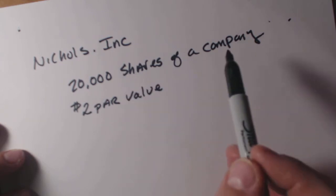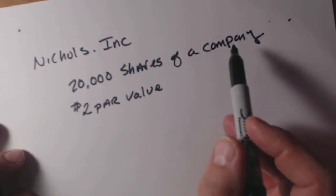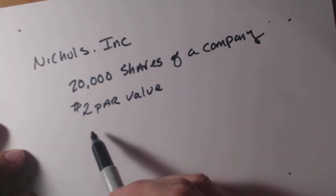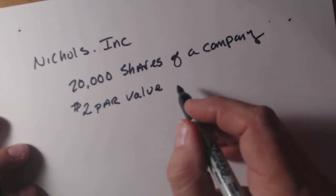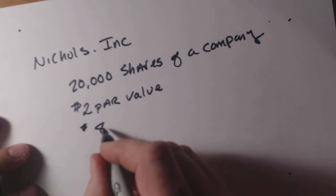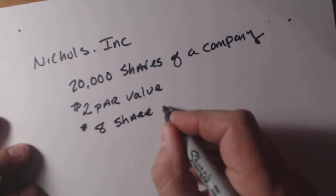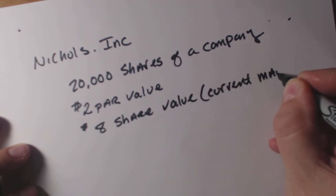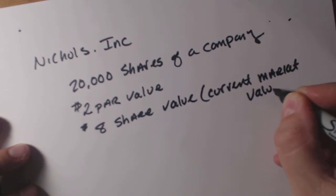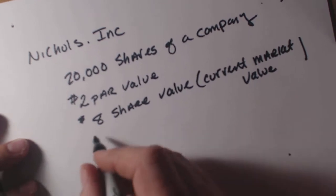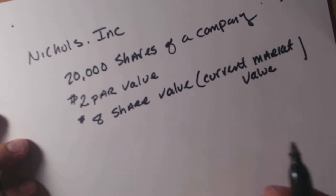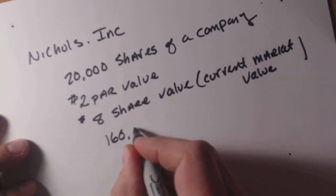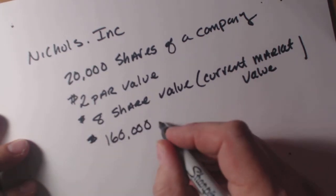Par value is an arbitrary and meaningless number, so keep that in mind. They started with 20,000 shares. When they registered the company as an incorporated company, they said they'd have 20,000 shares, each worth two dollars. Then they set the share value — the current market value of the shares — at $8. So if you do a quick multiplication: $8 times 20,000 shares means the company is worth $160,000.